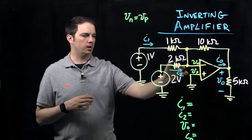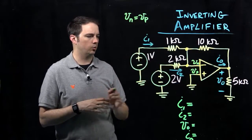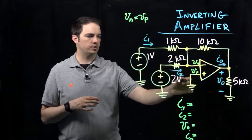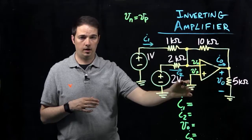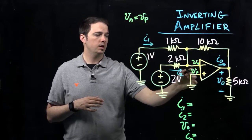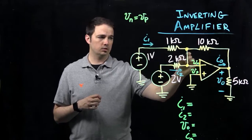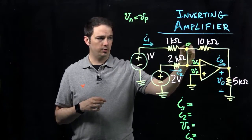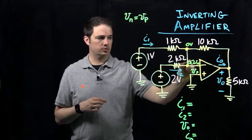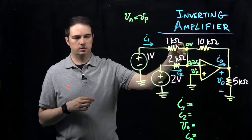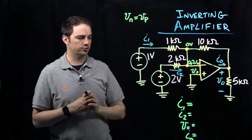Here specifically, we see that VP is tied to ground, to zero volts, and therefore VN also must be at zero potential. We know that at each of these points, since they're connected by a wire, it's going to be at zero volts potential.